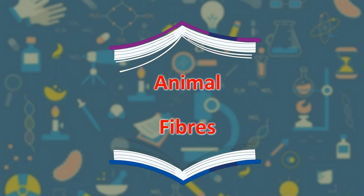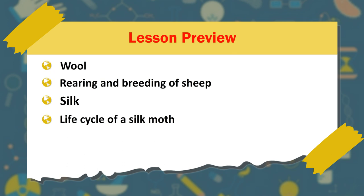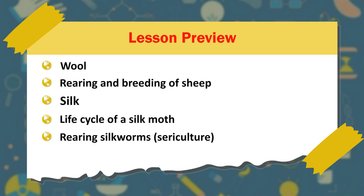Animal Fibers. Lesson Preview: Wool — Rearing and Breeding of Sheep. Silk — Life Cycle of a Silk Moth, Rearing Silkworms, Sericulture. Health Hazards in the Wool and Sericulture Industry.